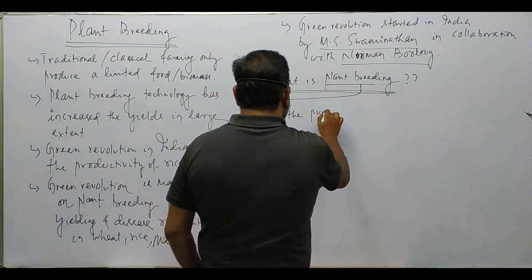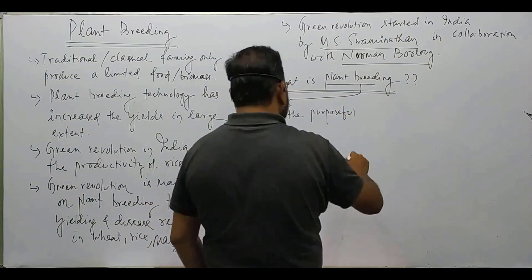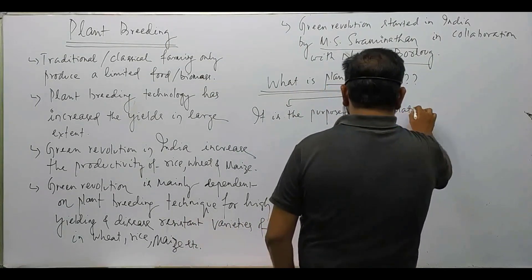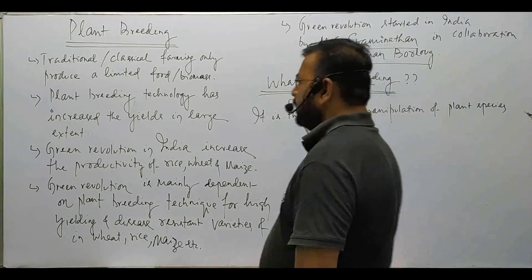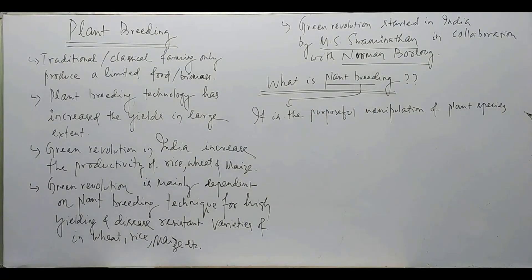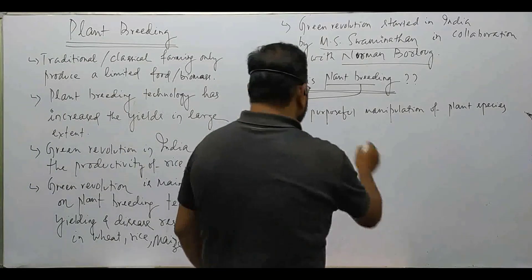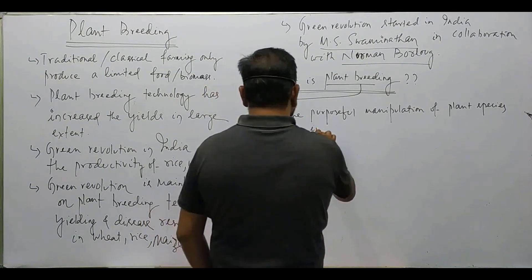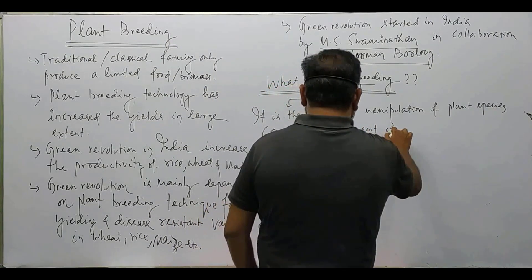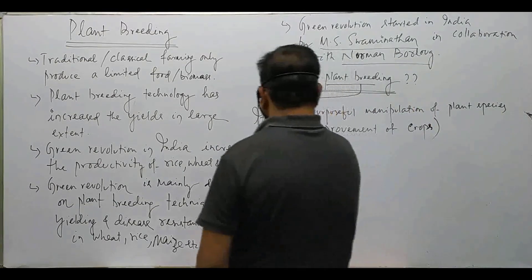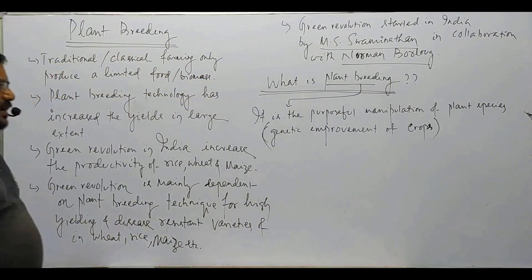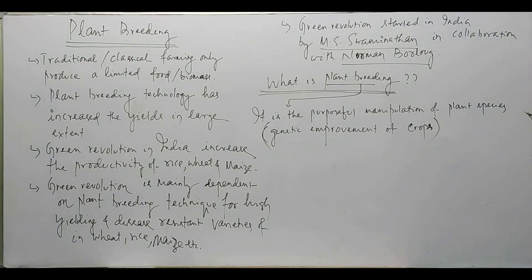Plant breeding is the purposeful manipulation of plant species. It involves genetically improving crops — changing genes to produce new desired characters. This purposeful genetic manipulation of plant species is known as the genetic improvement of crops.